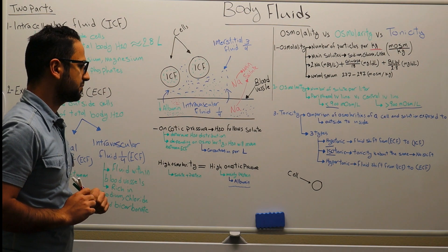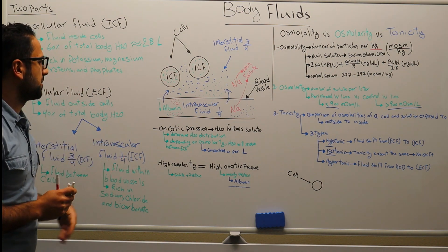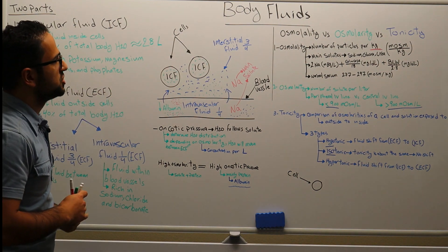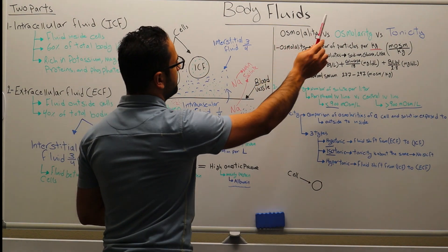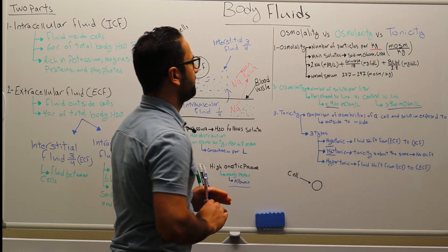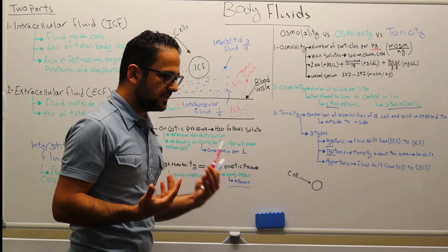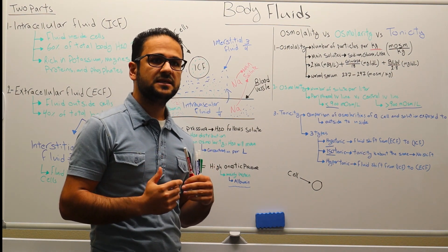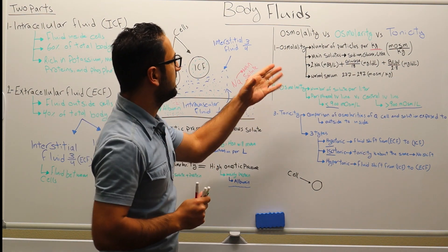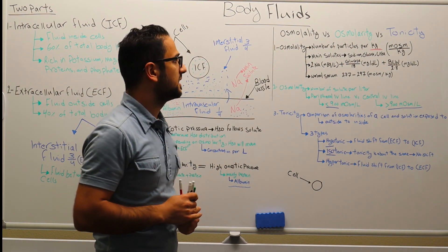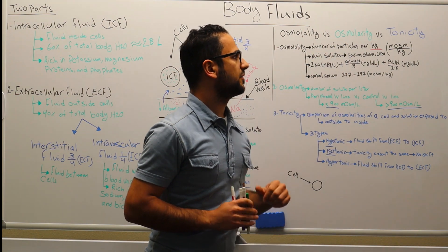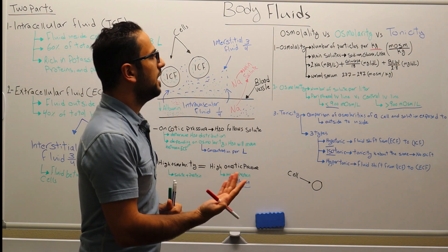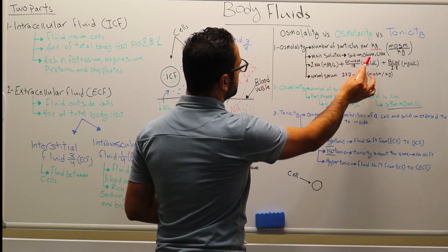Now moving from oncotic pressure to the comparison between osmolality, osmolarity, and tonicity. Osmolality is used for helping and diagnosing patients — for example, if a patient has diabetes, dehydration, or shock. Osmolality can help in diagnosing because it is the number of particles per kilogram (osmol per kilogram), and the main solutes in osmolality are sodium, glucose, and urea.